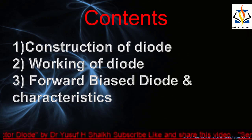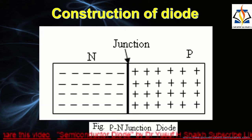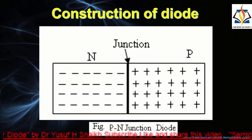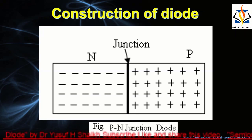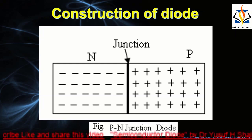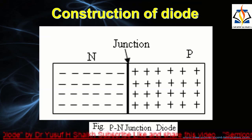A PN junction is formed when a single crystal of semiconductor is doped with fifth group impurity on one side and third group impurity on the other. This doping makes one side an n-type semiconductor and the other side a p-type semiconductor. The surface of contact of p and n-type semiconductors is called the p-n junction.